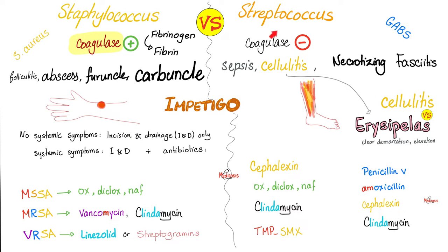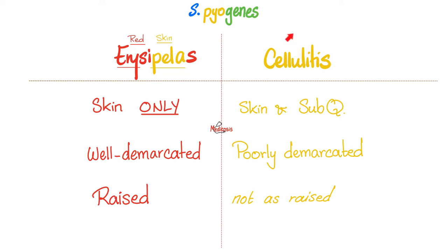Erysipelas is caused by group A beta-hemolytic streptococcus, also known as streptococcus pyogenes. It's a subtype or special type of cellulitis. Erysipelas has clear demarcation and the lesion is elevated off the surface of the skin. Comparing erysipelas versus cellulitis: both are caused by streptococcus pyogenes, but erysipelas is skin only, while cellulitis is deeper — skin and subcutaneous tissue.